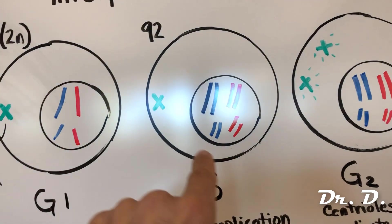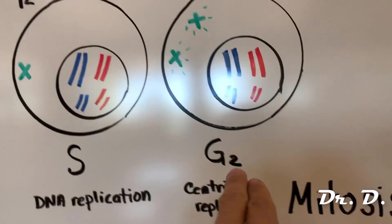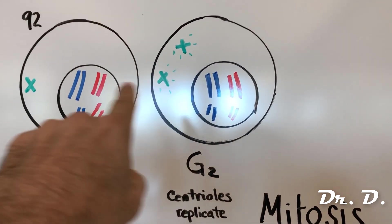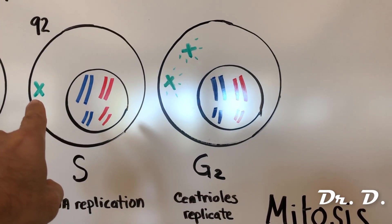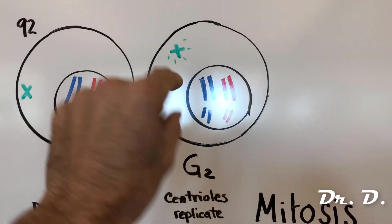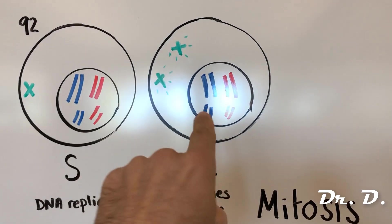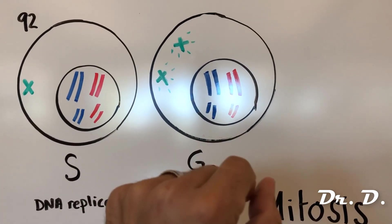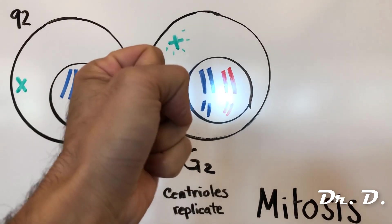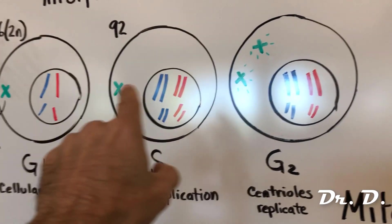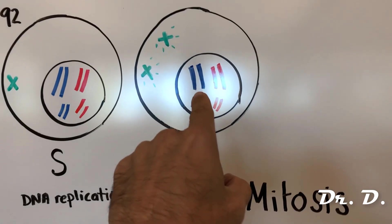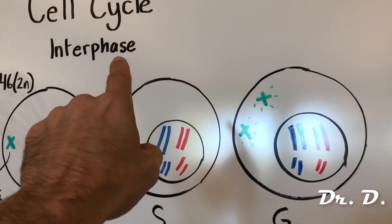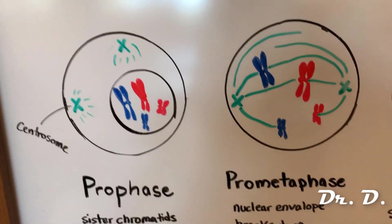Next we enter G2, growth phase 2. The centrioles — where there was one bundle — replicate, and now you have two bundles of centrioles that start to drift apart. The DNA also starts to condense into mitotic chromosomes. Remember, DNA is loose and then starts to condense in preparation for mitosis. This marks the end of interphase.